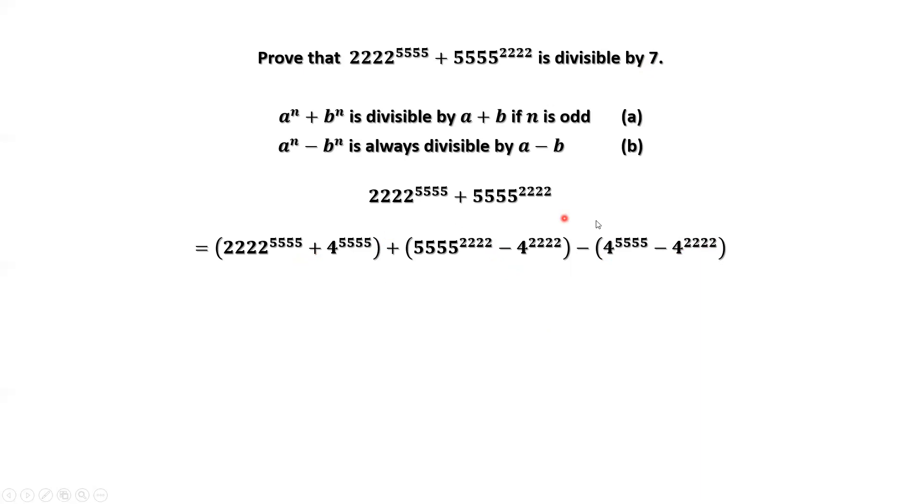Therefore, this part is a linear combination of three groups. This implies the right-hand side is divisible by 7. Therefore, the left-hand side is divisible by 7.